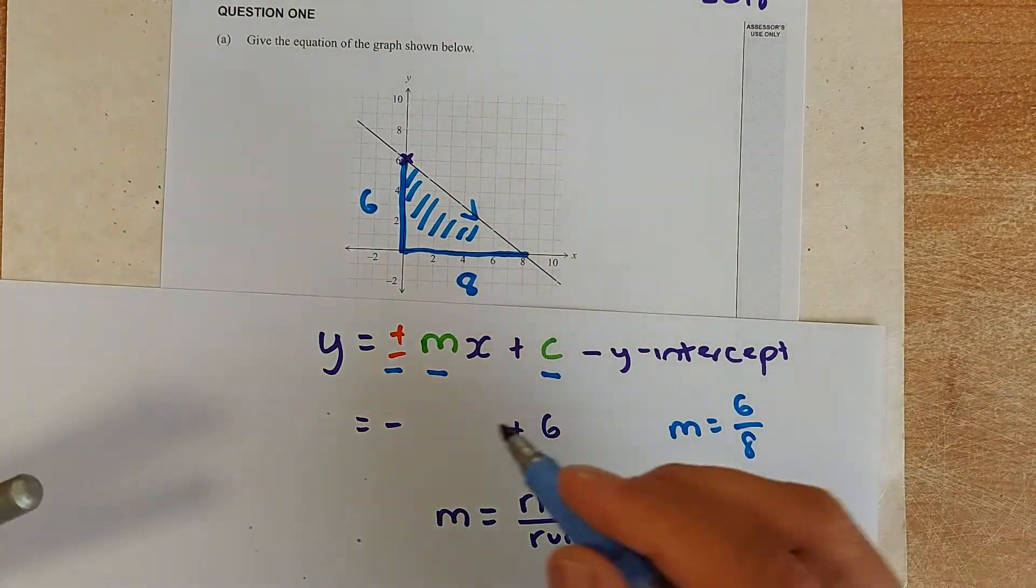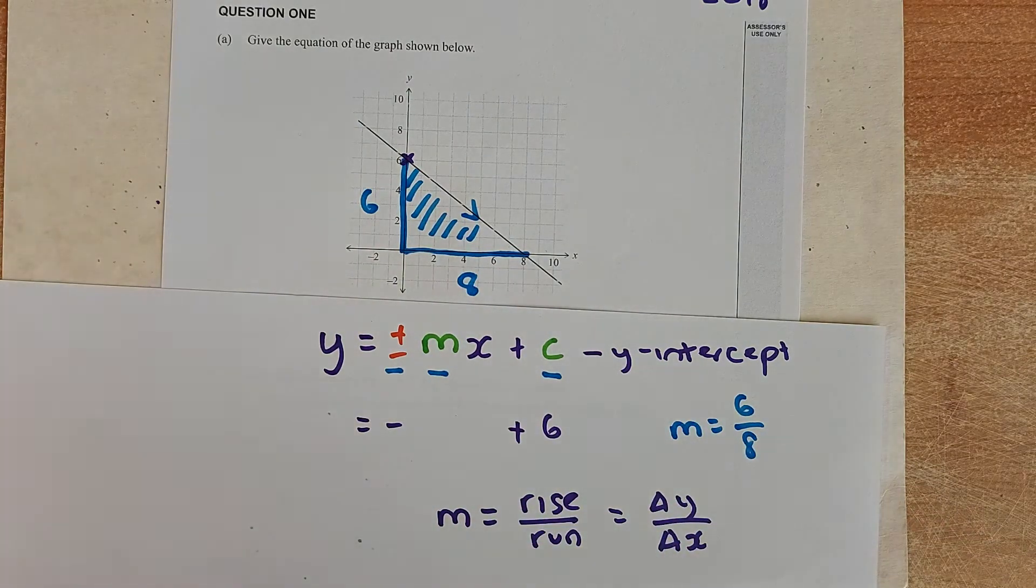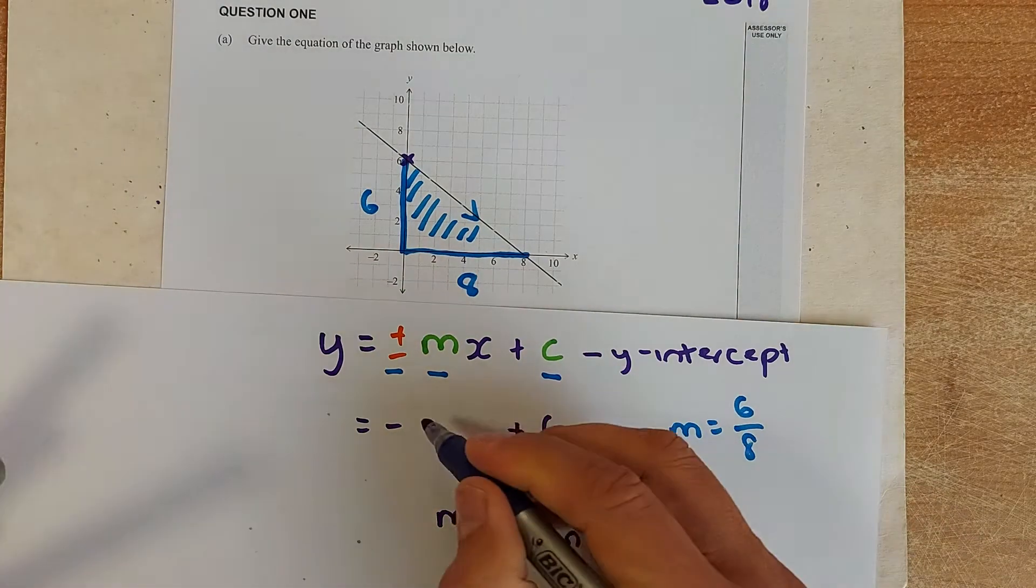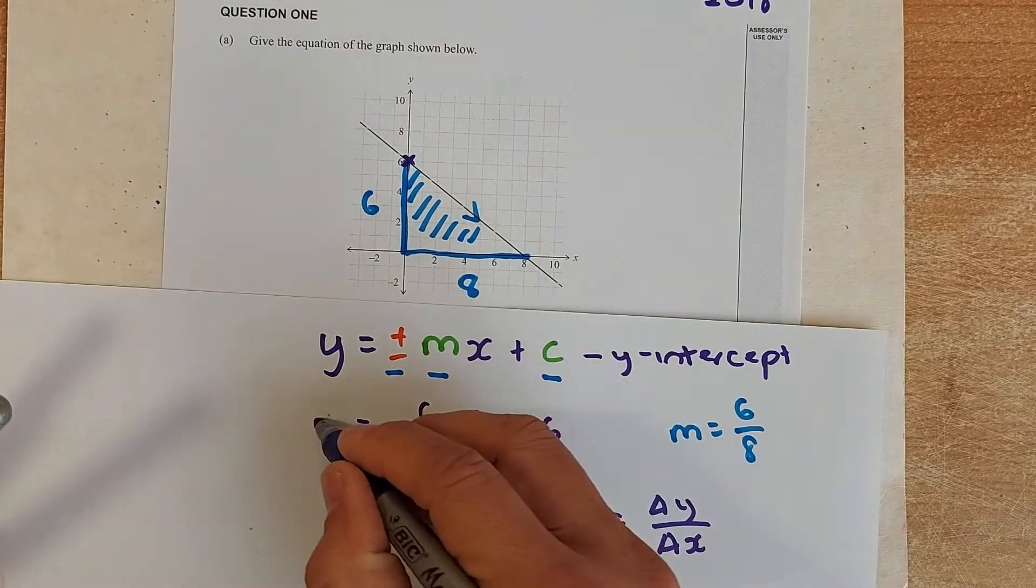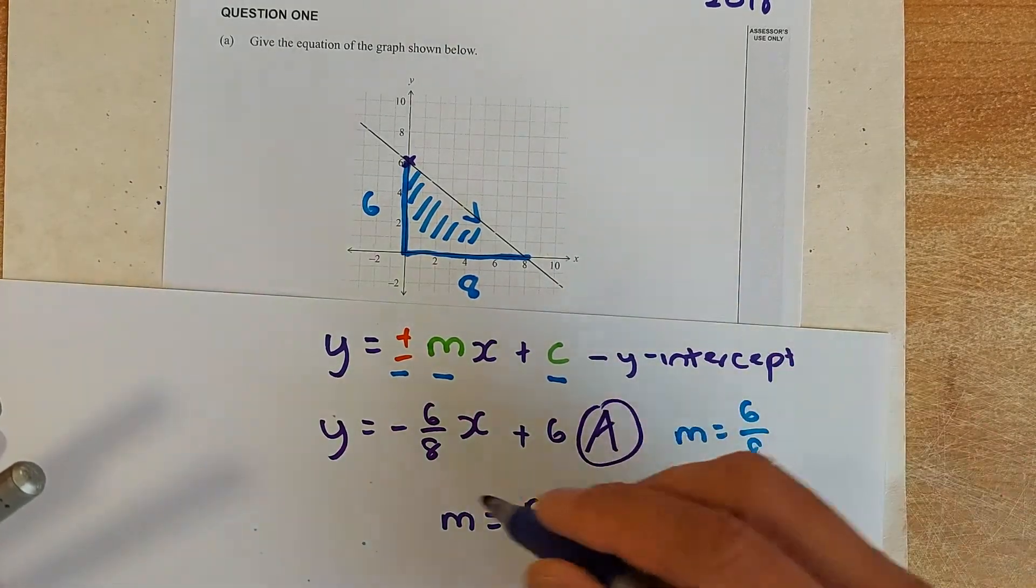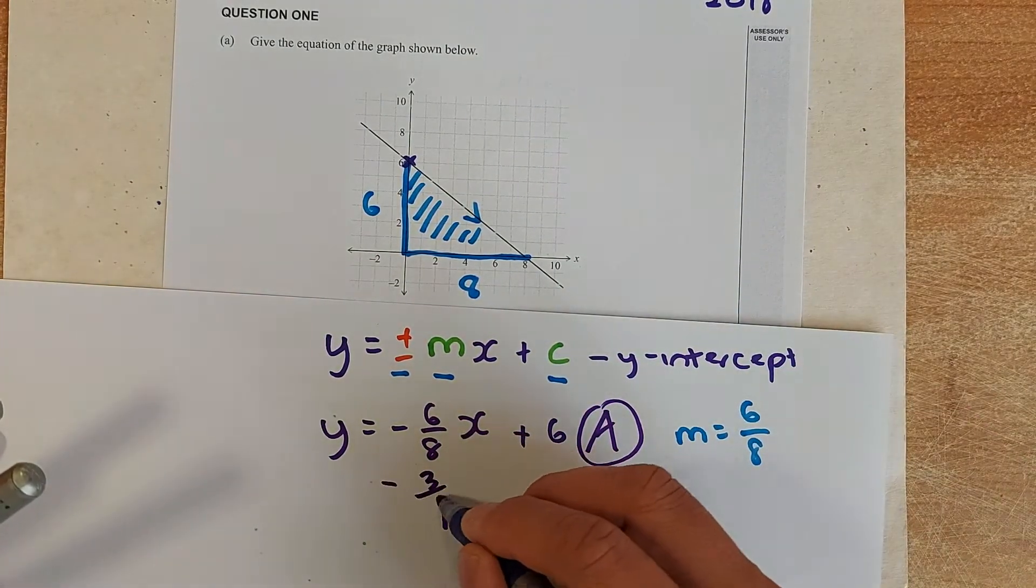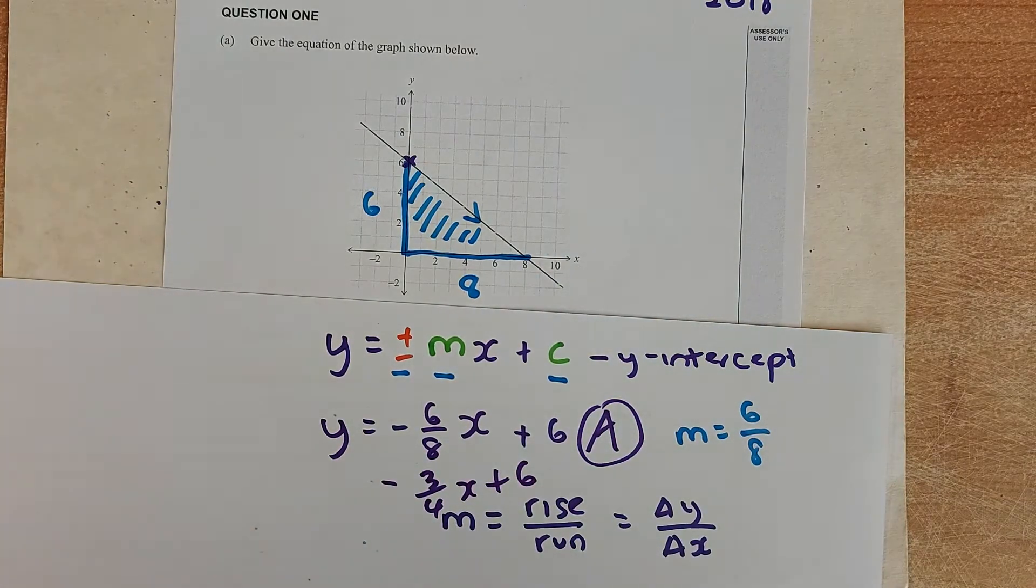So what you need to do, you are going to put the M, which is now 6 over 8, into the equation. So 6 over 8 and the x remains and your equation is done. So that will give you an achieve. If you want to simplify to minus 3 over 4x plus 6, it is also acceptable. So that will give you an achieve in NCEA level 1.